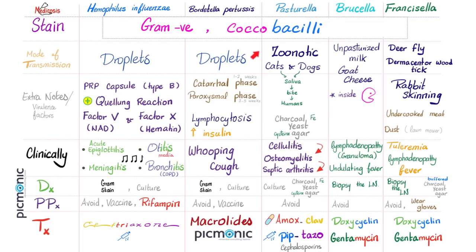Bordetella pertussis: droplet transmission; catarrhal phase followed by paroxysmal phase with attacks of whooping cough, lymphocytosis, and increased insulin. Inhibition of Gi leads to increased cyclic AMP. Gram stain and culture for diagnosis. There is a vaccine. Treatment: macrolides — erythromycin, azithromycin, clarithromycin. Avoid erythromycin in very young infants.